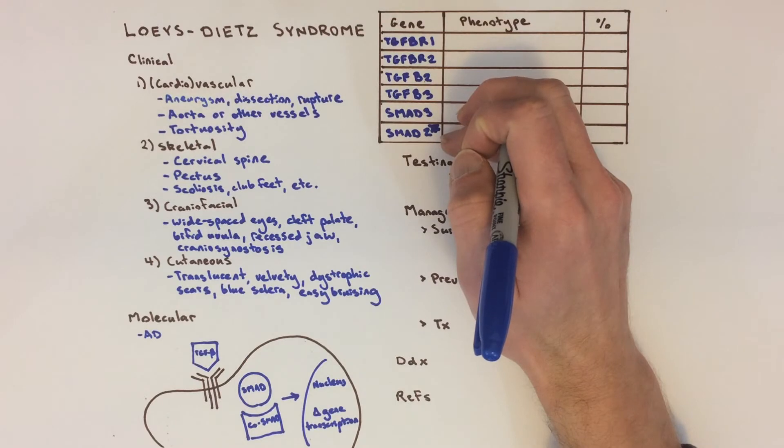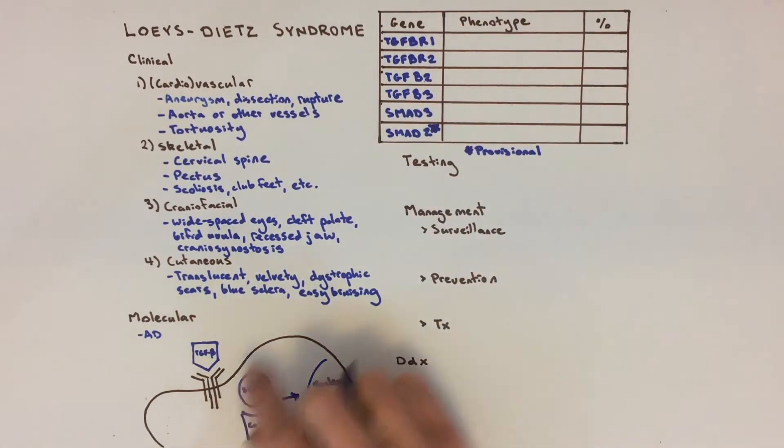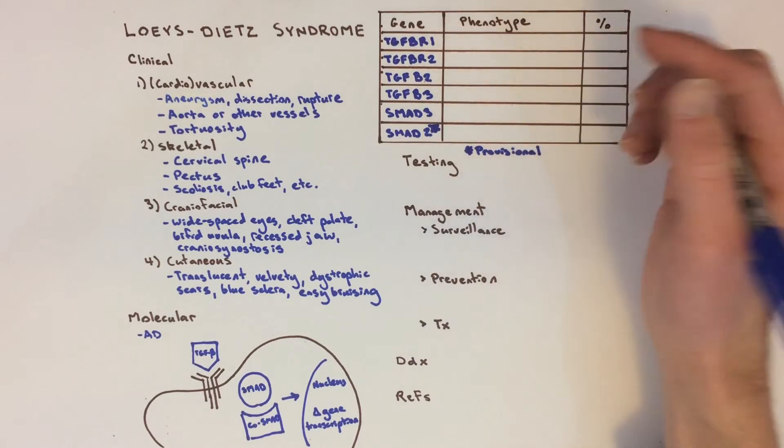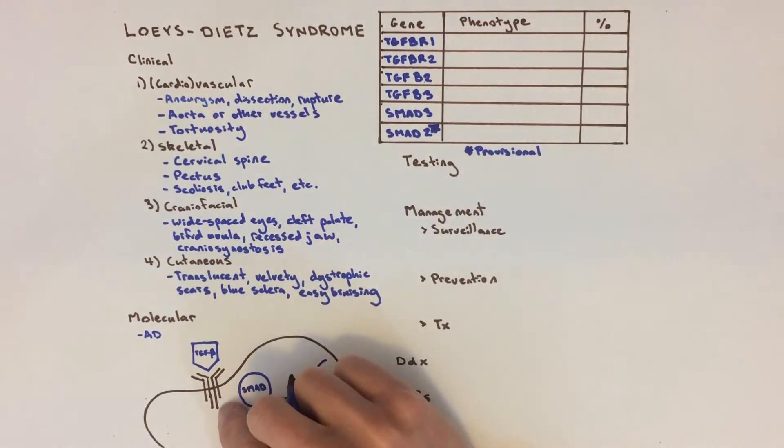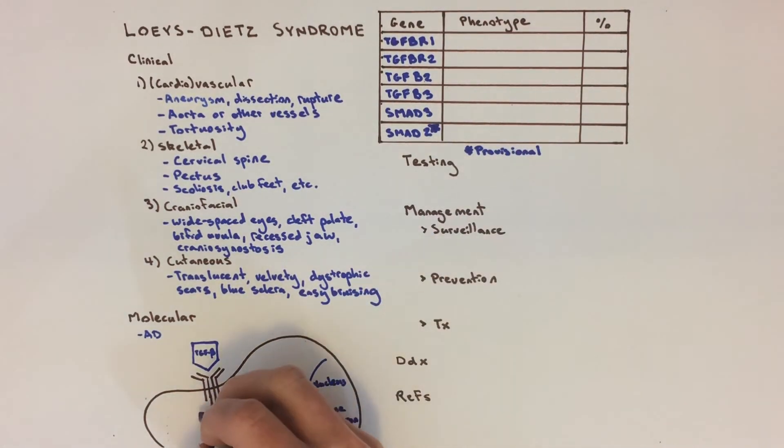Interestingly, the mutations in TGF-beta receptor 1 and 2 tend to only be missense mutations in the intracellular kinase domains of the proteins they encode, which take part in signal transduction.